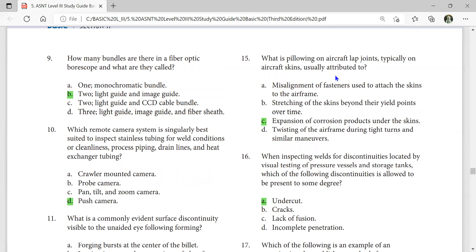What is pillowing on aircraft lap joints, typically on aircraft skins? Usually attributed to expansion of corrosion products under the skin.